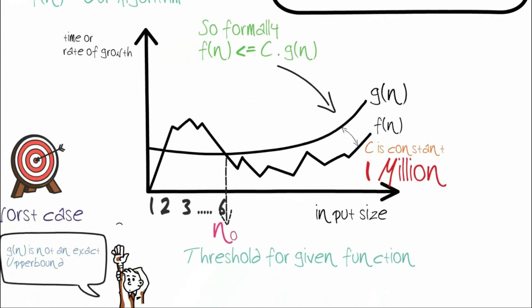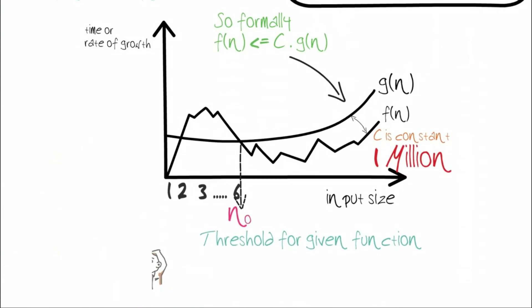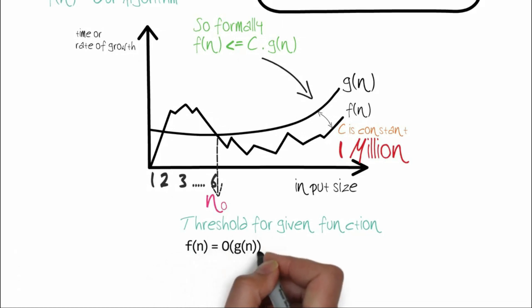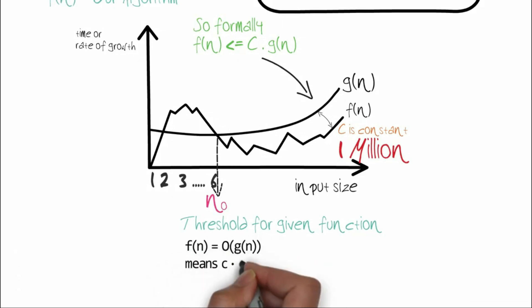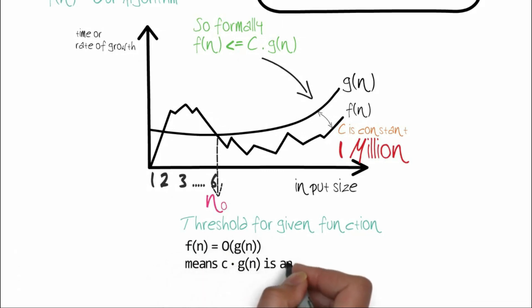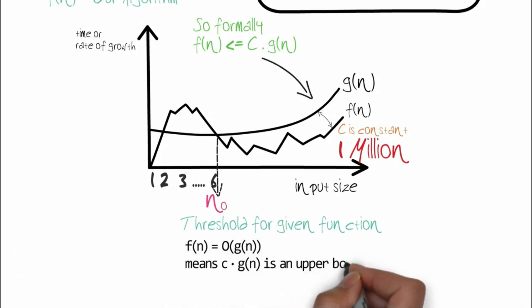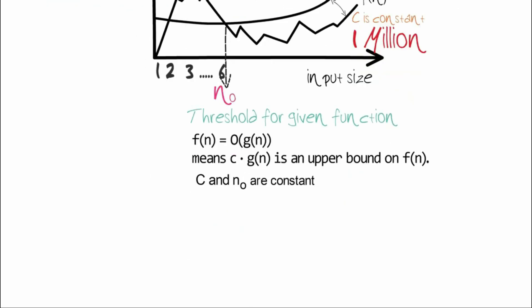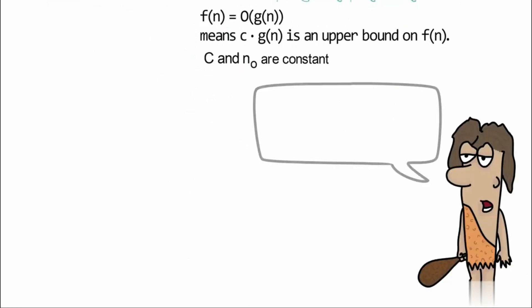The formal definition of big O notation: f(n) is Big O of g(n) if c times g(n) is an upper bound on f(n). So f(n) is less than or equal to c times g(n), meaning g(n) is an upper bound on f(n).